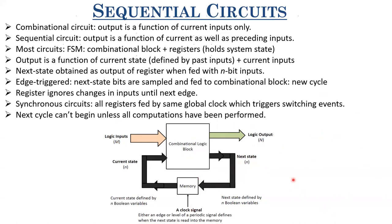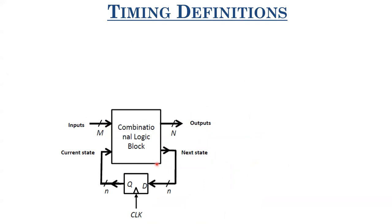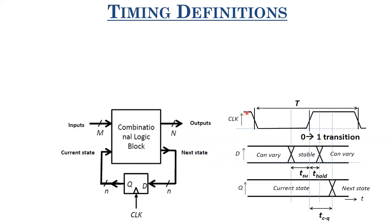Now let us look at some timing definitions. Since everything is synchronized with respect to the clock signal, there are timing constraints and new terms. We have M inputs feeding a combinational logic block. This is the current state (n bits), the capital N bit logic output, and the next state output bits fed to a D register. If it is a positive edge triggered register, let us look at the timing diagram. Whenever the clock goes from zero to one, D is sampled at the Q node.